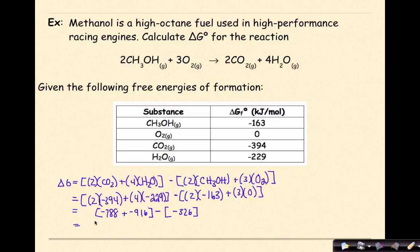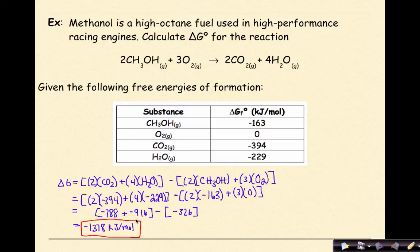I'll continue the calculations. 2 times negative 394 is negative 788. 4 times negative 229 is negative 916. 2 times negative 163 is negative 326. Working out the final answer gives negative 1,378 kilojoules per mole, which means this is a spontaneous reaction. And that summarizes a number of different ways of how to find free energy under standard conditions.